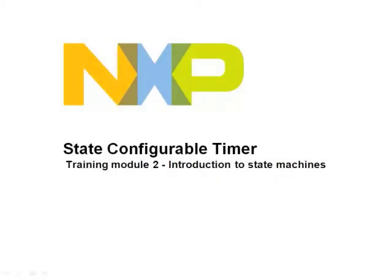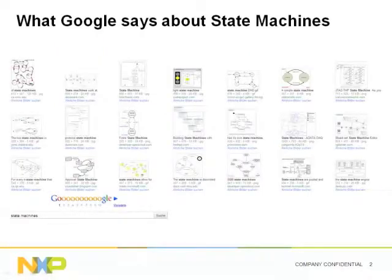Welcome to the second module of our SCT training sessions. In this module we introduce the concept of a state machine, which is one of the advanced features provided by the state configurable timer. This is a small snapshot of what the web community says about state machines. There are a lot of different sources of information on this subject, but unfortunately no unique way of describing such a concept. Still, we'll try to find some common terminology in order to understand how to apply this concept to the state configurable timer.